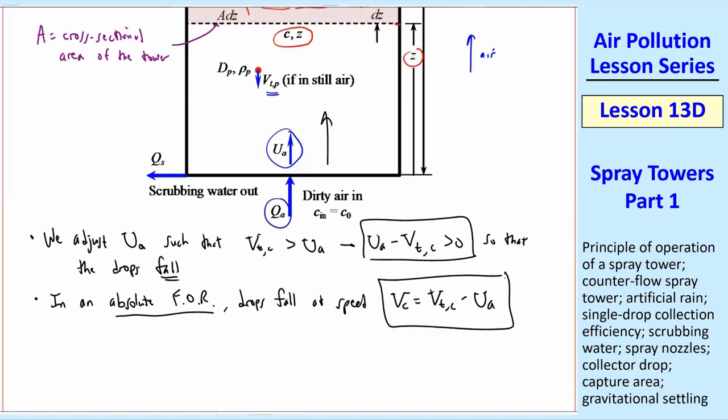In other words, we make sure that UA minus VTC is greater than zero so that the drops fall. In an absolute frame of reference, the drops fall at speed VC, we'll call it, VTC minus UA. We just subtract those two velocities, as I already mentioned. In the same way, the particles rise instead of fall at a speed UA minus VTP.